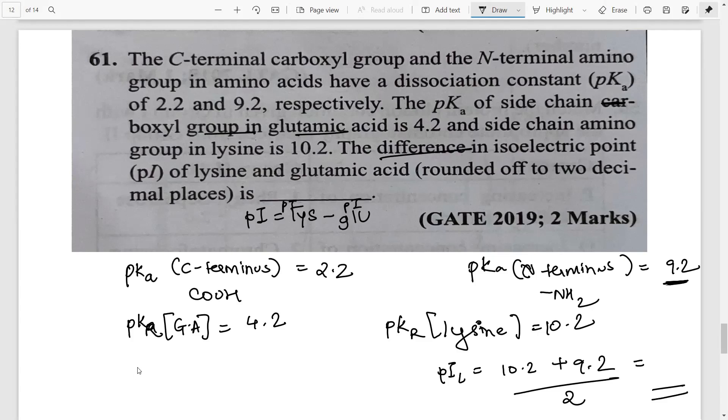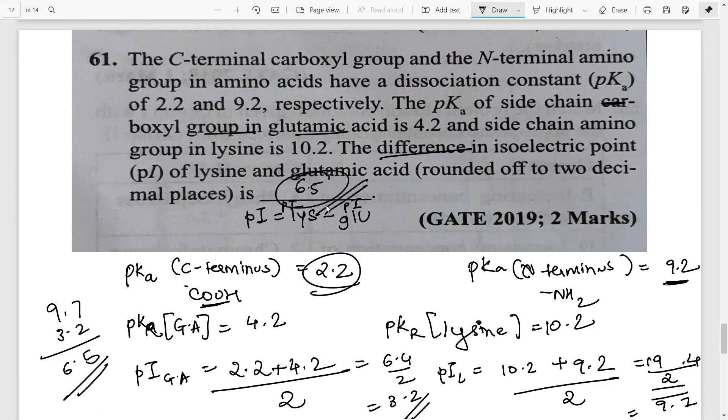Then for the glutamic acid we have again pI of glutamic acid. The ionizable group is this so the R group value is 4.2. Which value you will take? This one 2.2 because it's an acidic amino acid, it's going to lose, this value smaller value, more dissociation, so you will take this calculate. So this will become 6.4 by 2 so that is 3.2. Did you all calculate for this one? What will this be? 4 and this will be 19.4 divided by 2 which comes out to be 9.7. Subtracting the two 9.7 minus 3.2 that comes out to be how much 6.5. So what is the answer? 6.5.